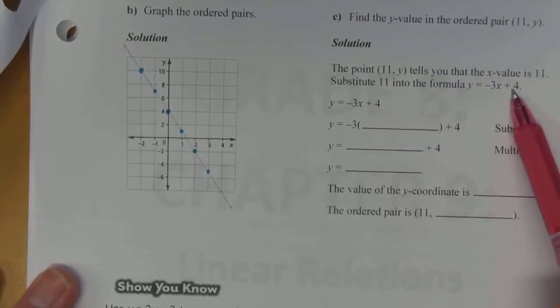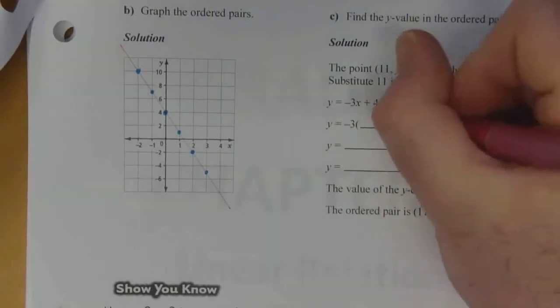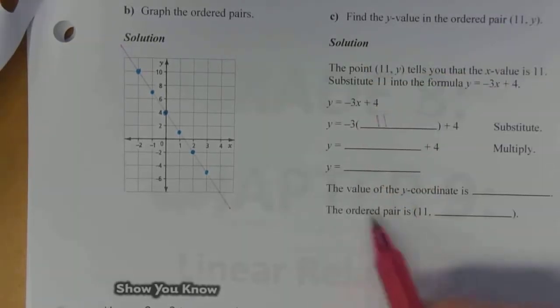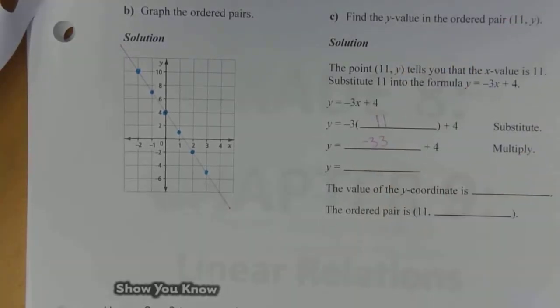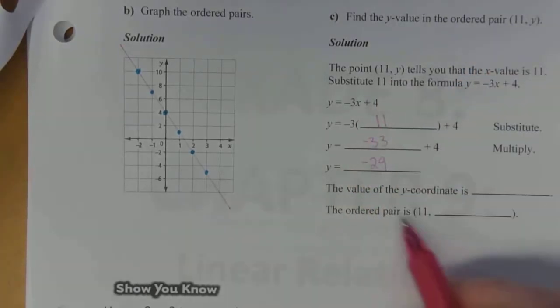So that means we can substitute 11 into our formula to calculate it. We don't have to necessarily use the graph. So we've got our original formula. We're going to substitute 11 in for x. So negative 3 times 11 is negative 33. And then we need to add 4 to that. So that's going to give us negative 29. So the value of the y coordinate then is negative 29.